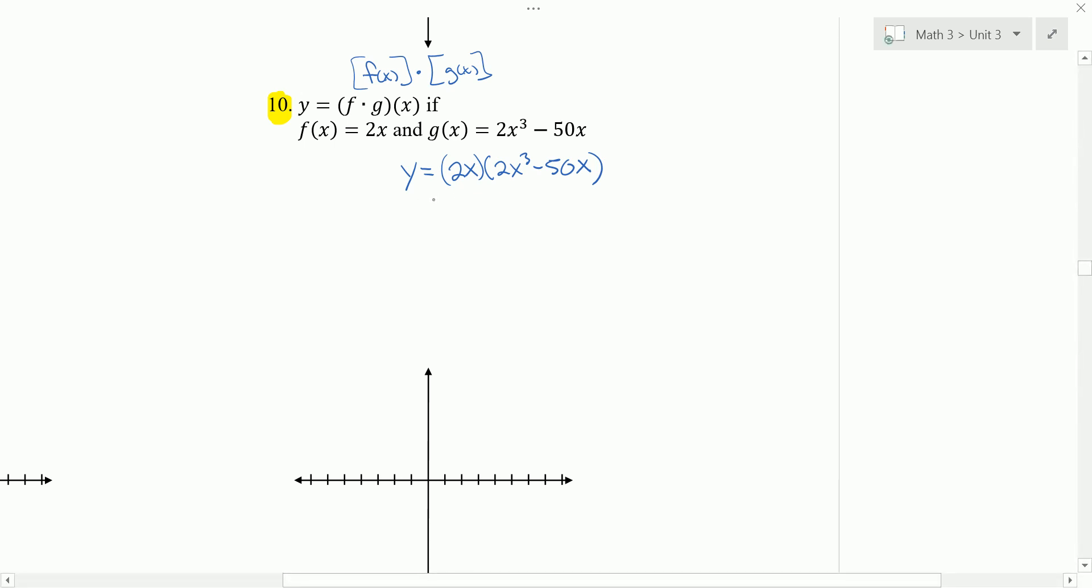And so the 2x is already factored enough. But the next factor, I could factor out another 2x. And I'm left with x squared minus 25. We can multiply the 2x times 2x. Or combine them. I'll do that for right now. 4x squared. But we can factor the x squared minus 25 to x plus 5 times x minus 5.